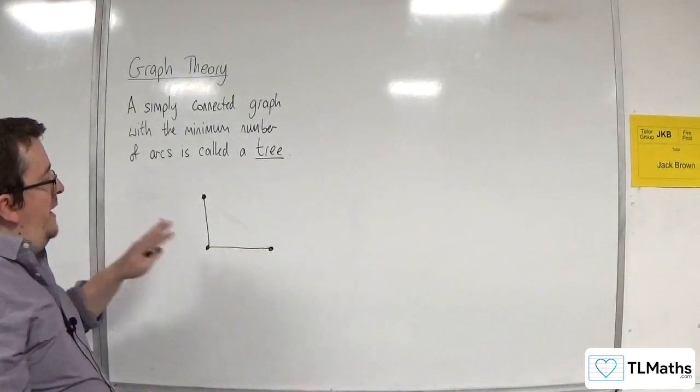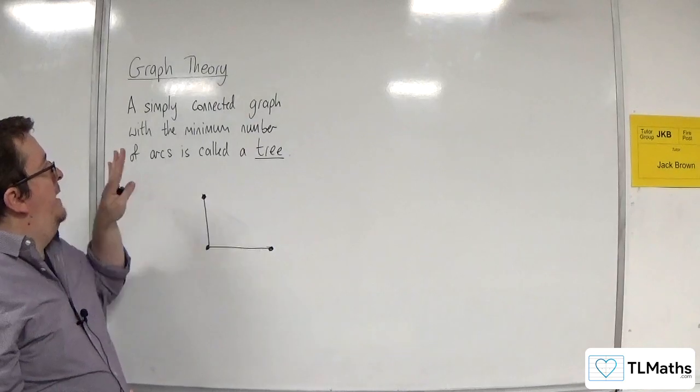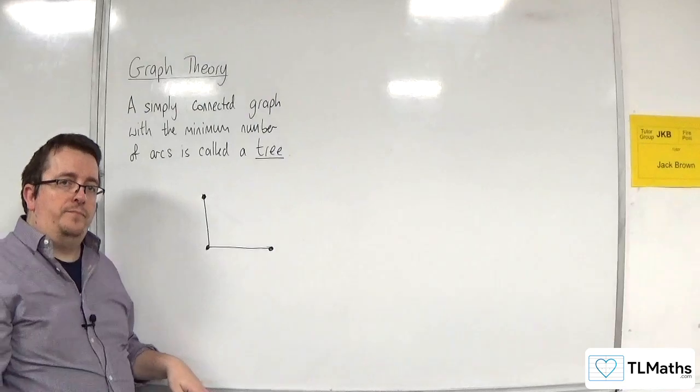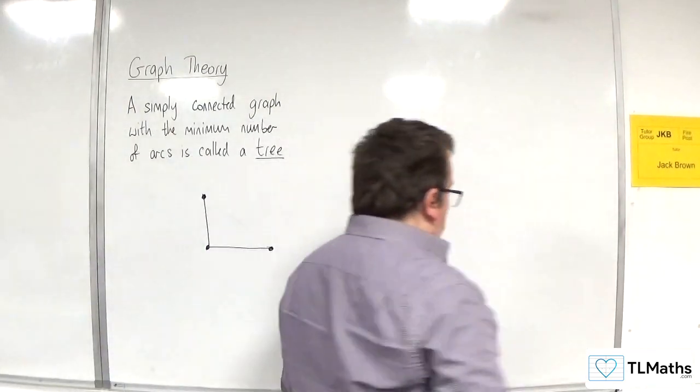So that is a tree and it is joining those three points with the minimum number of arcs available. So let's draw some more trees.